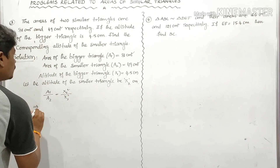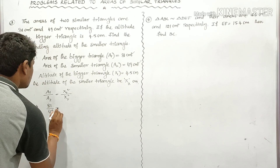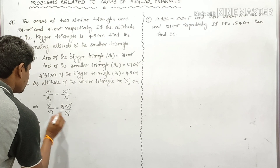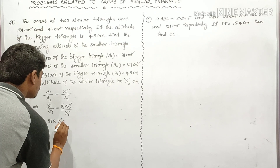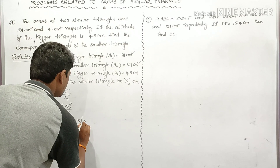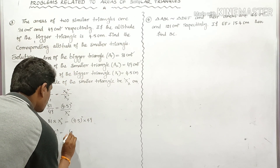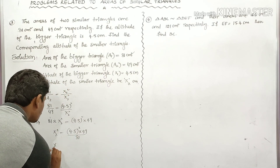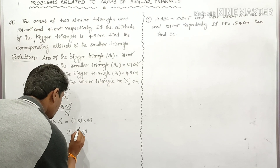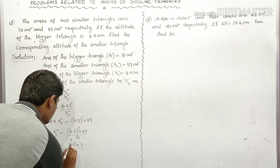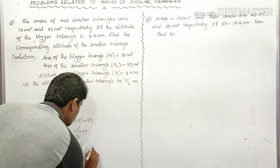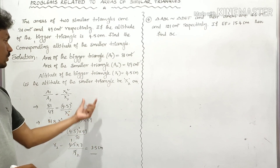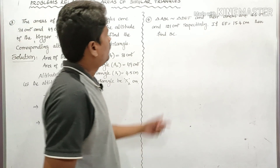Substituting: 81 / 49 = (4.5)² / X2². By cross multiplication, 81 × X2² = (4.5)² × 49. So X2² = (4.5)² × 49 / 81. Applying square root on both sides: X2 = 4.5 × 7 / 9 = 3.5 centimeters. Therefore, the altitude of the smaller triangle is 3.5 centimeters.